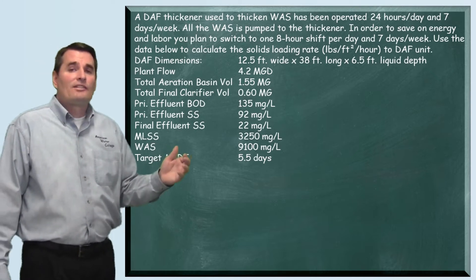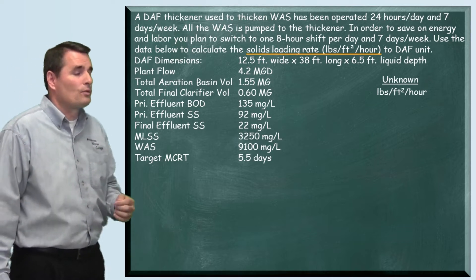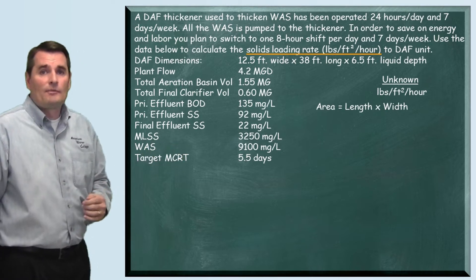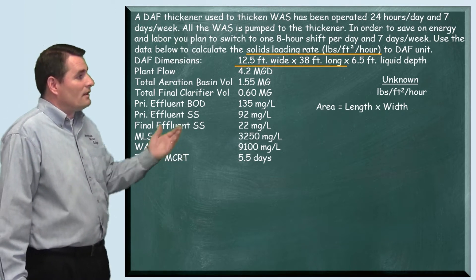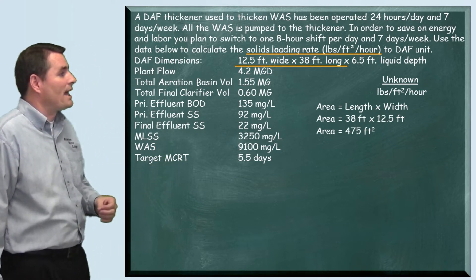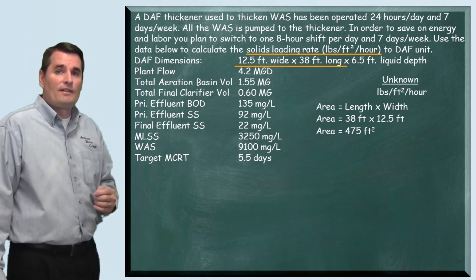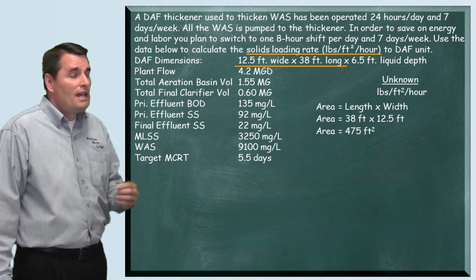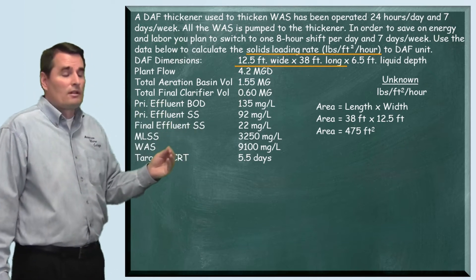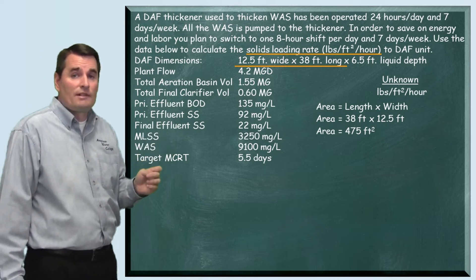First, let's solve for the area of this DAF unit. We're looking for pounds per square foot per hour — that's our target. Calculating the area is simply length times width, using 12.5 feet and 38 feet. Plugging that in, we find that the surface area of this DAF is 475 square feet. So part of our answer is right here: 475 square feet.